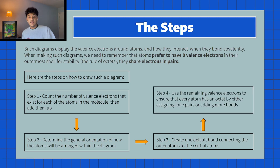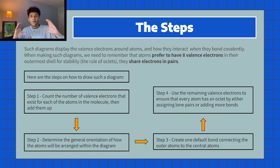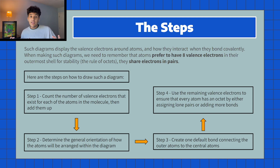The third step is to create a default beginner diagram by connecting all the atoms with one line. One line denotes one covalent bond, sharing two valence electrons. Once you've drawn that, you'll have some leftover valence electrons that haven't been used and you have to integrate them into the diagram to incorporate all the valence electrons within that molecule. In some cases, just drawing that simple diagram means you're done.